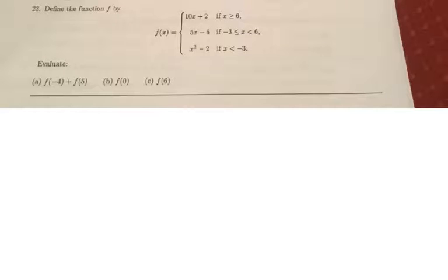Well let's look at 23. 23 is designed as a piecewise function. So if x is greater than or equal to 6, it behaves like 10x plus 2. If x is between negative 3 and 6, including negative 3 but not 6, it behaves like 5x minus 6. And if x is less than negative 3, it behaves like x squared minus 2.